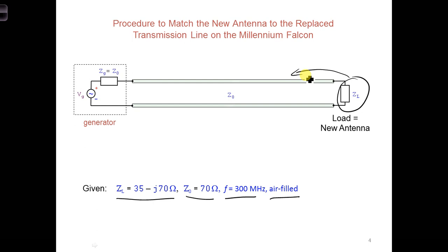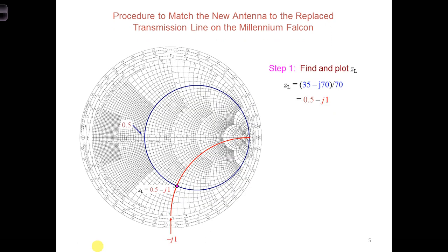Normalizing the load impedance is what we'd have to do first. So we'd have to find little zl, is 35 minus j70 over 70, which is 0.5 minus j1. And this is plotted on the Smith chart here. I think we've done this before.